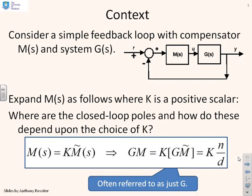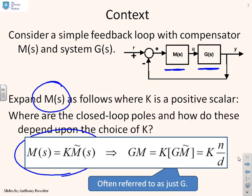Consider a simple feedback loop with compensator M(s) and system G(s). What we want to do is expand this compensator M(s). So we've extracted out the gain factor K. I've written M equals K M tilde. And then when I put that together I end up with GM, which is the loop transfer function, written with K extracted. Then I've got GM tilde.